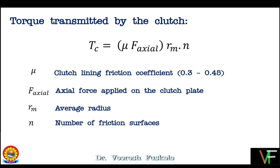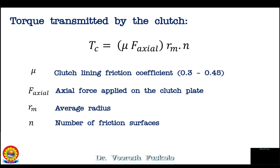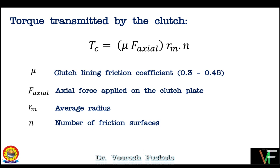The torque transmitted by the clutch is given by T = μ × F_axial × R_M × N, where μ is the clutch lining friction coefficient, F_axial is the axial force applied on the clutch plate — the force by which the clutch plate remains in contact with the flywheel — R_M is the mean or average radius, and N is the number of friction surfaces or disks.